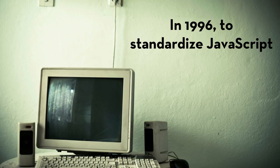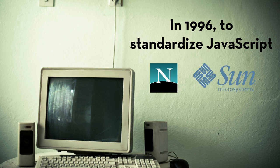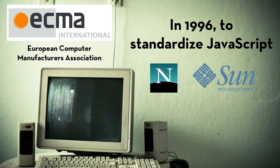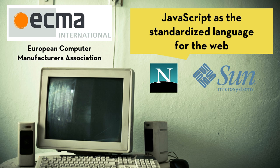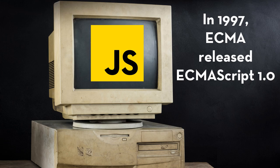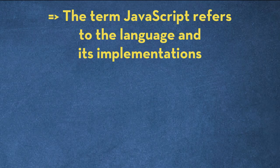You might have heard about ECMAScript and its various versions — what are they? In 1996, to try to standardize JavaScript, Netscape and Sun Microsystems went to ECMA International — the European Computer Manufacturers Association — to propose JavaScript as the standardized language for the web. In 1997, ECMA released ECMAScript 1.0, which is what is now generally referred to as JavaScript.